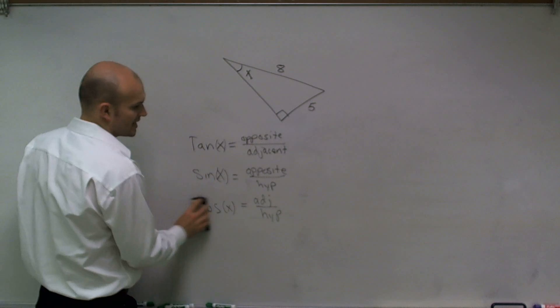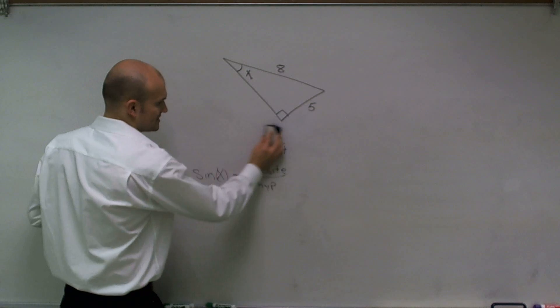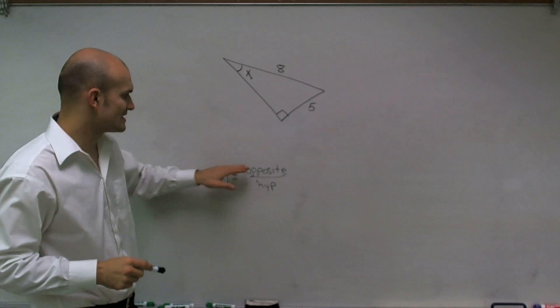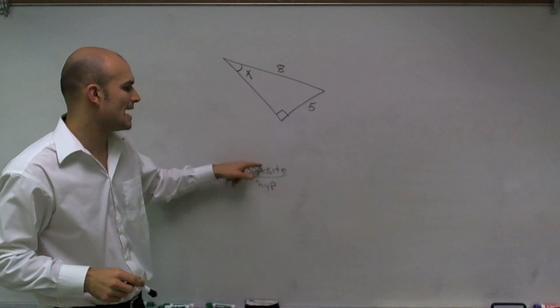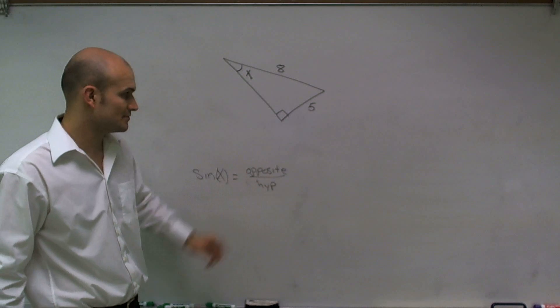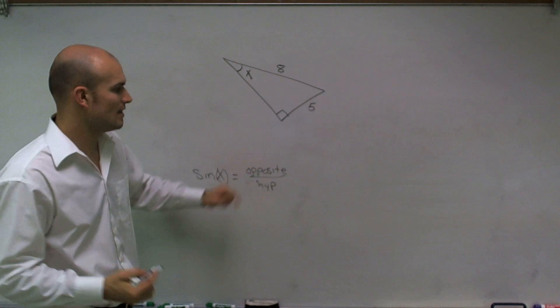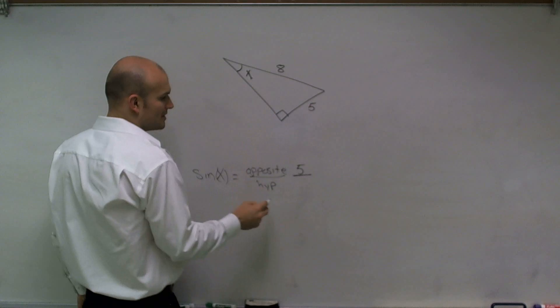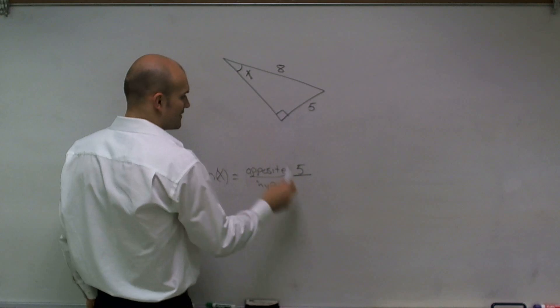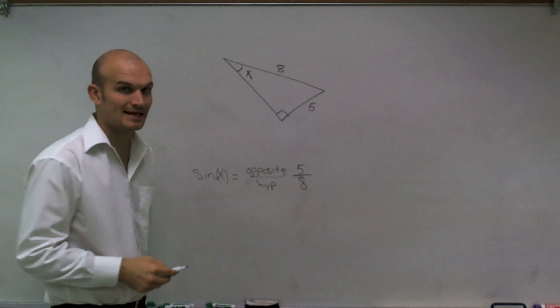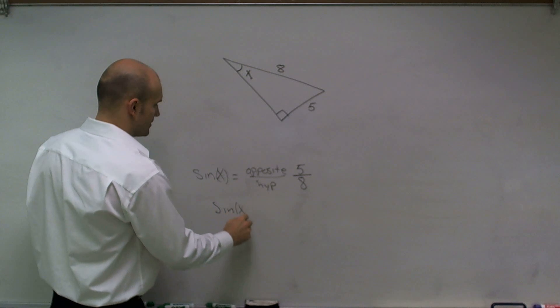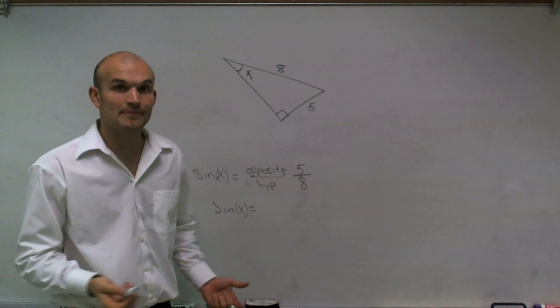So therefore, I'm just going to forget about the tangent and the cosine. Now I have sine of x equals the ratio of the opposite side over the hypotenuse side. So now what I need to do is say, I know the opposite side is equal to 5, and the hypotenuse is equal to 8. So I have sine of x is equal to 5 divided by 8.